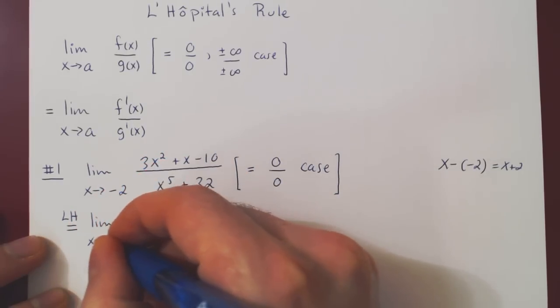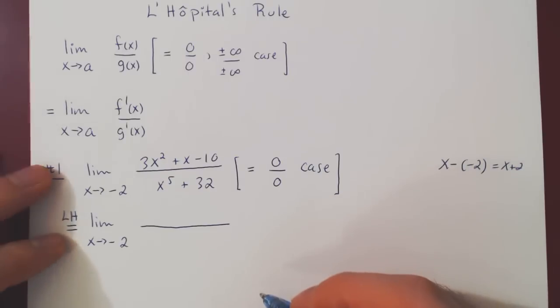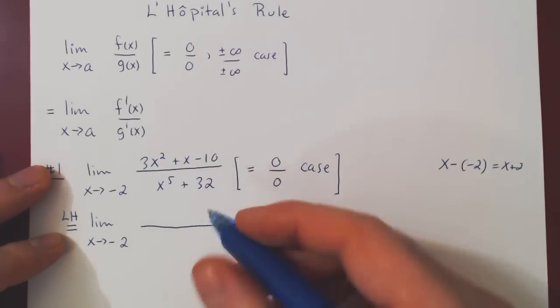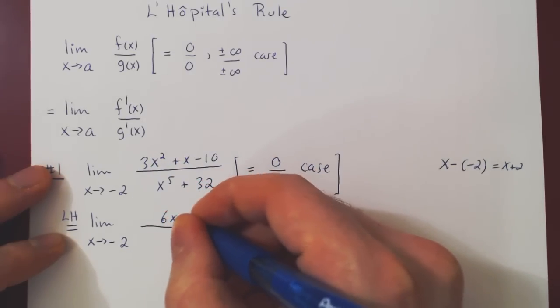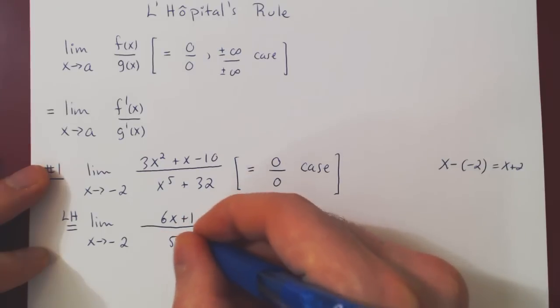So x is still approaching negative 2, and now we differentiate both our numerator and denominator. The derivative here will be 6x plus 1, over 5x to the 4 plus 0, which is 5x to the 4.